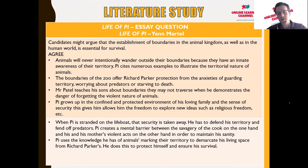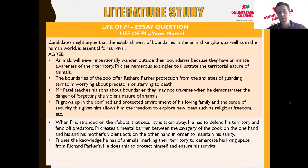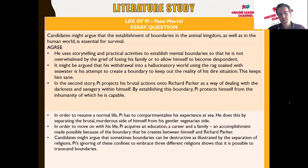When Pi is stranded on the lifeboat — the crux of the story — that security is taken away. He has to defend his territory and fend off predators. Pi creates a mental barrier between the savagery of the cook and his mother's violent acts in order to maintain his sanity. He uses his knowledge of animals marking territory to demarcate his living space from Richard Parker's, protecting himself and ensuring his own survival.